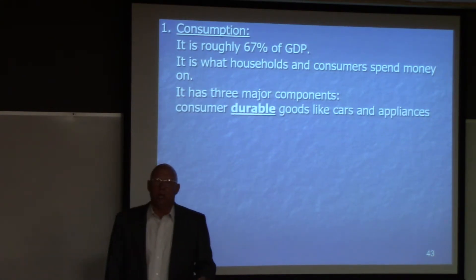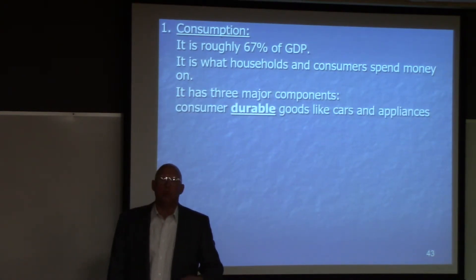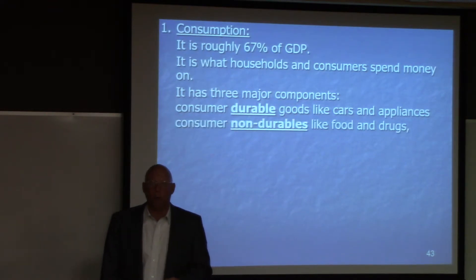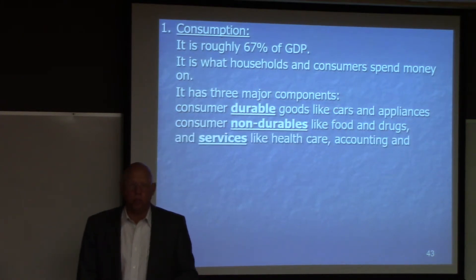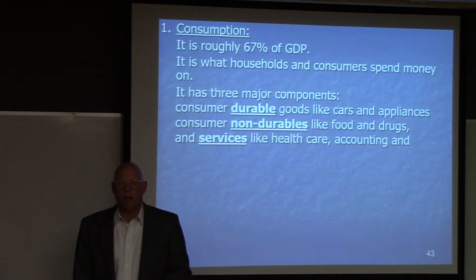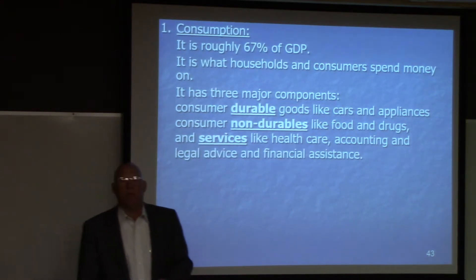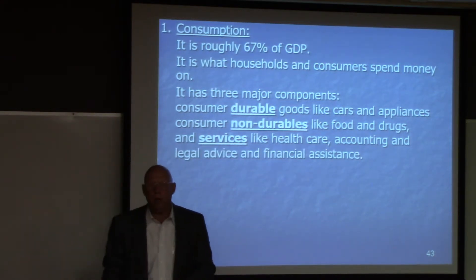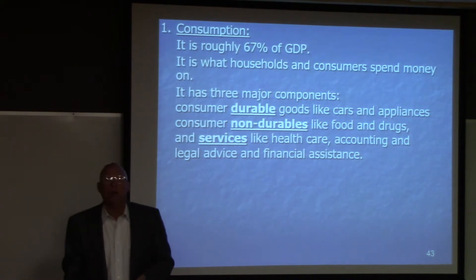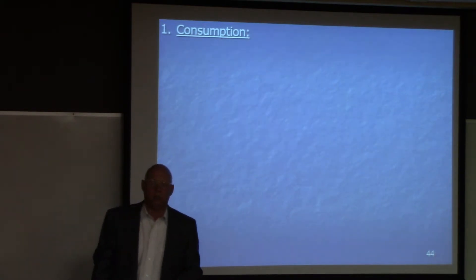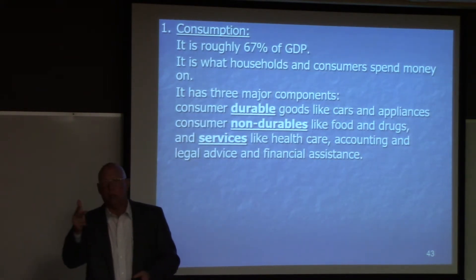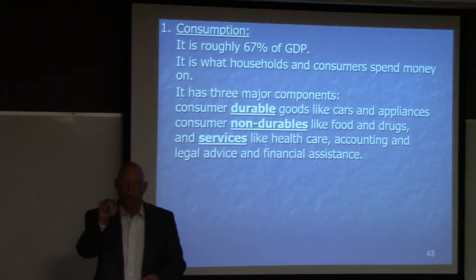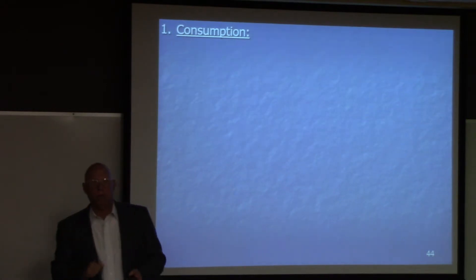The three major components of consumption are: durable goods like cars and appliances — things that last for multiple periods of time; non-durable goods like food and drugs; and services like healthcare, accounting, law, financial assistance, and restaurants. Notice that housing is not in there — we'll take a look at housing in just a second.